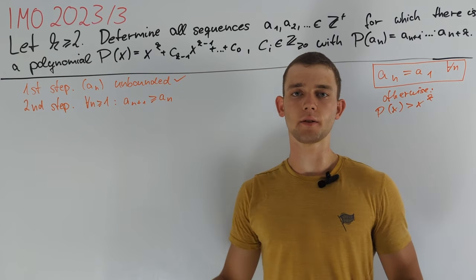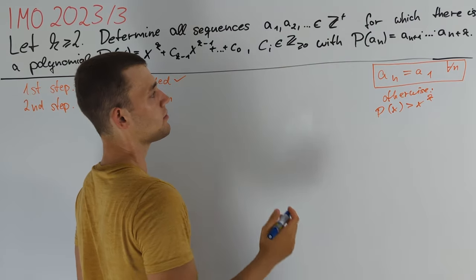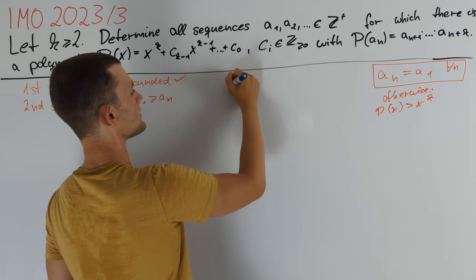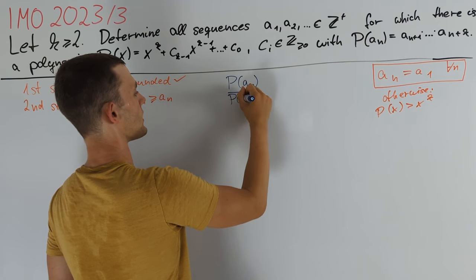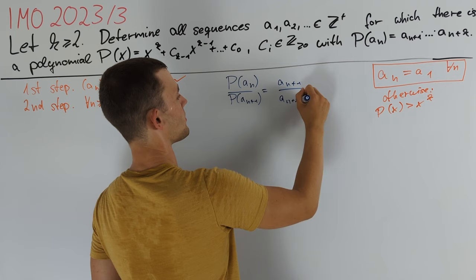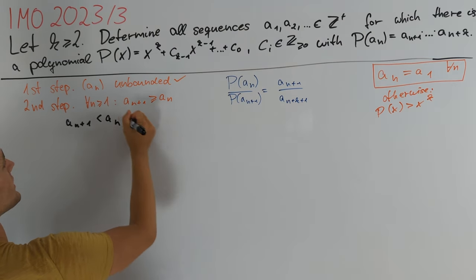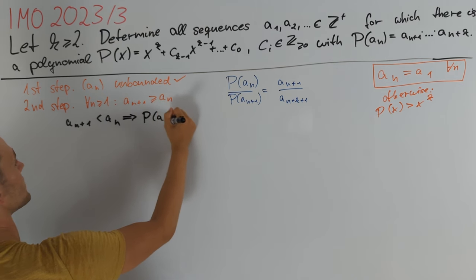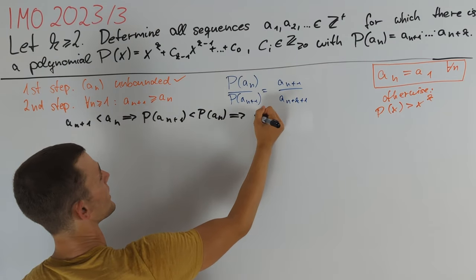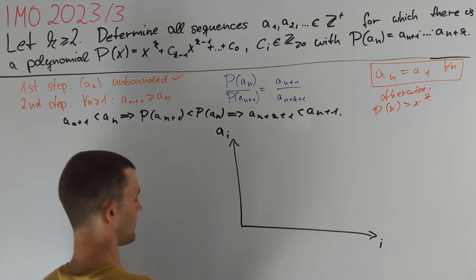In the second step we want to prove that a_n is an increasing sequence. The key observation is that plugging in a_{n+1} into the functional equation, the right sides almost match up perfectly. Dividing those two equations gives p(a_n) divided by p(a_{n+1}) equals a_{n+1} divided by a_{n+k+1}. So if we assume the opposite, namely a_{n+1} less than a_n, then since p is strictly increasing, p(a_{n+1}) is less than p(a_n), and therefore a_{n+k+1} is less than a_{n+1}. Looking at the graph of a_i, it looks something like this.